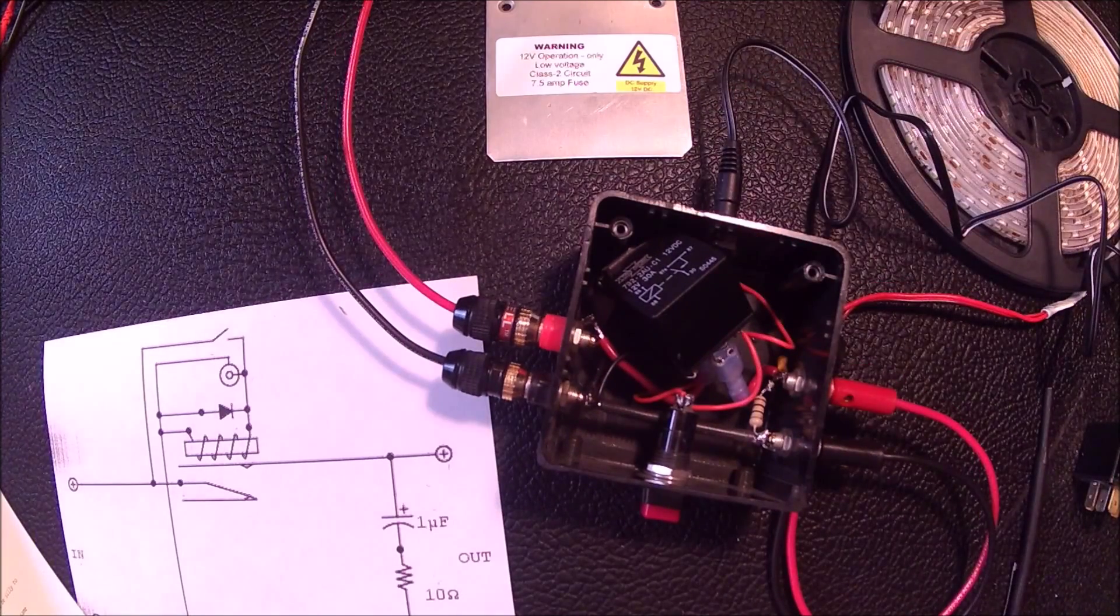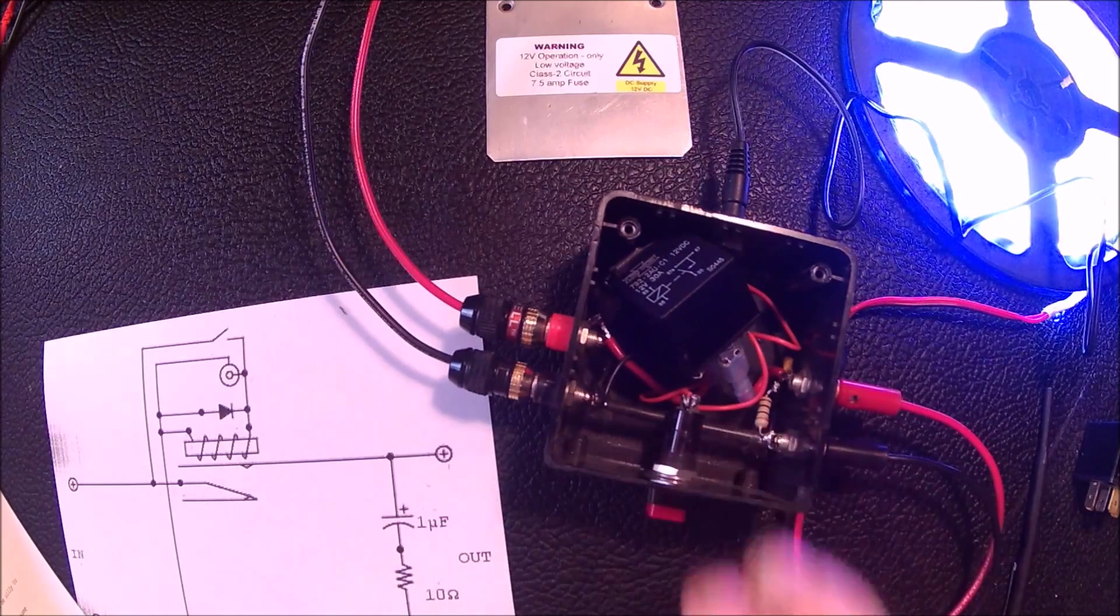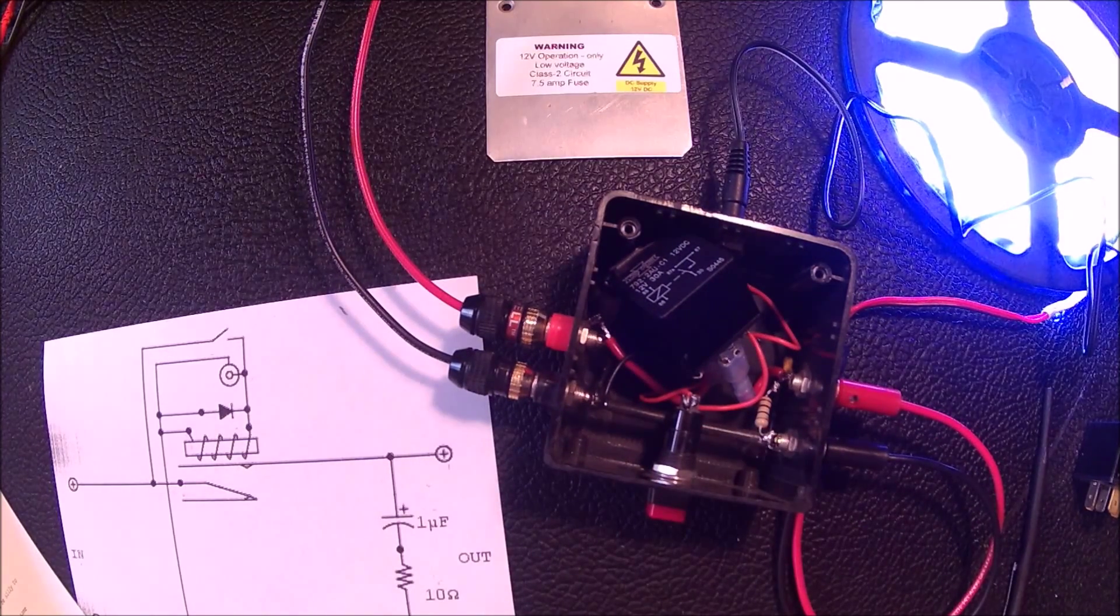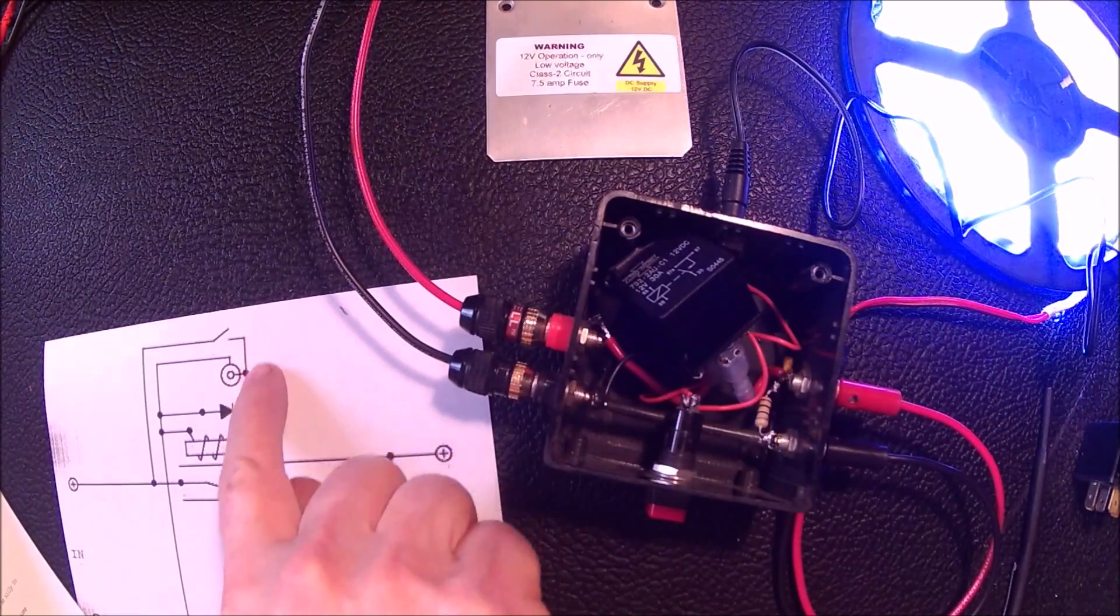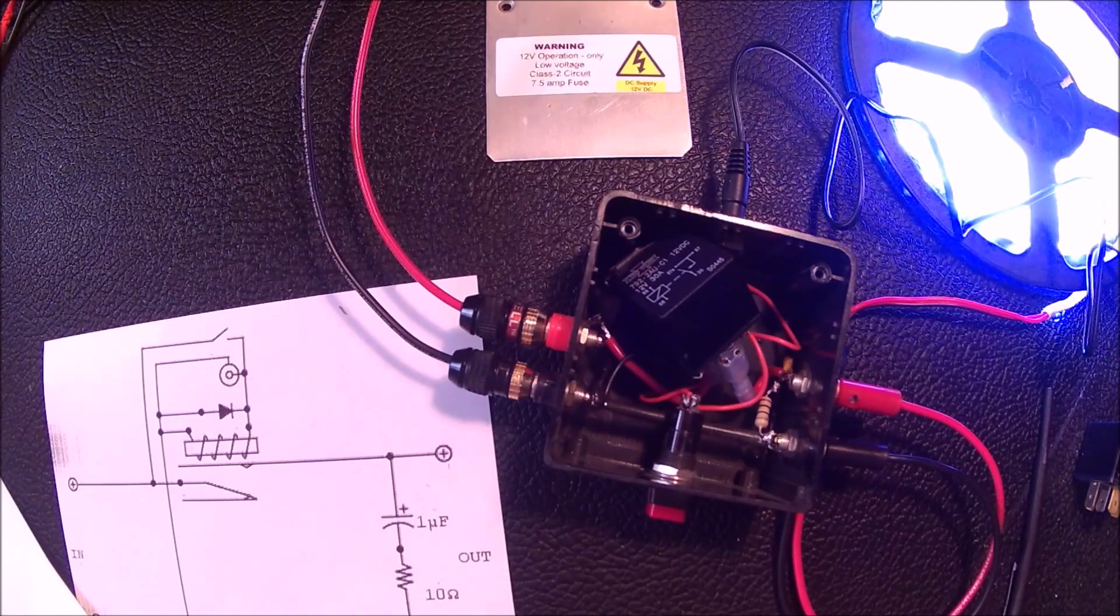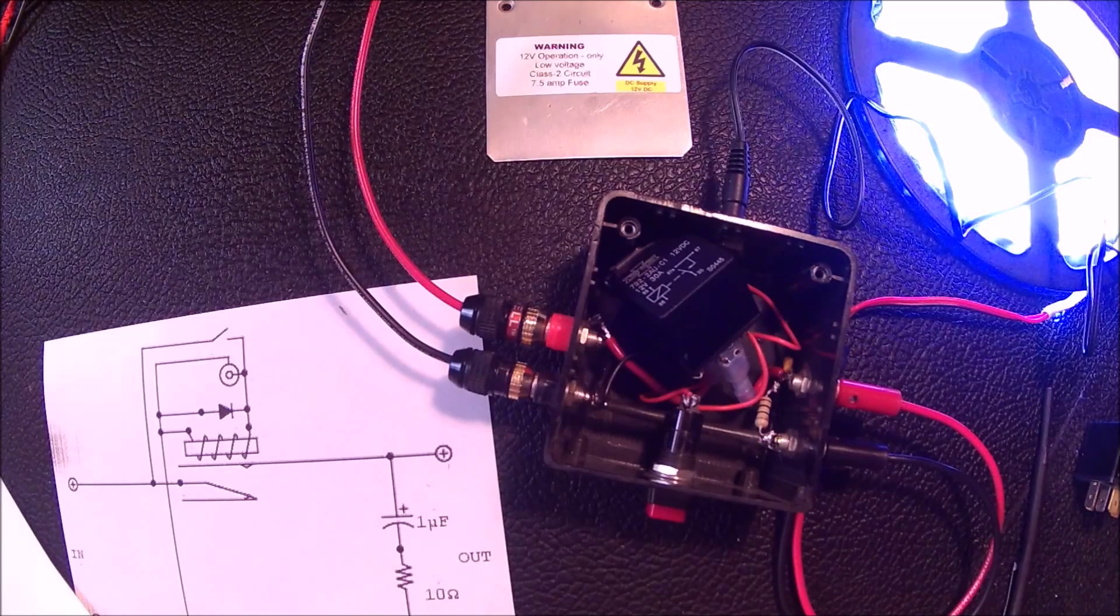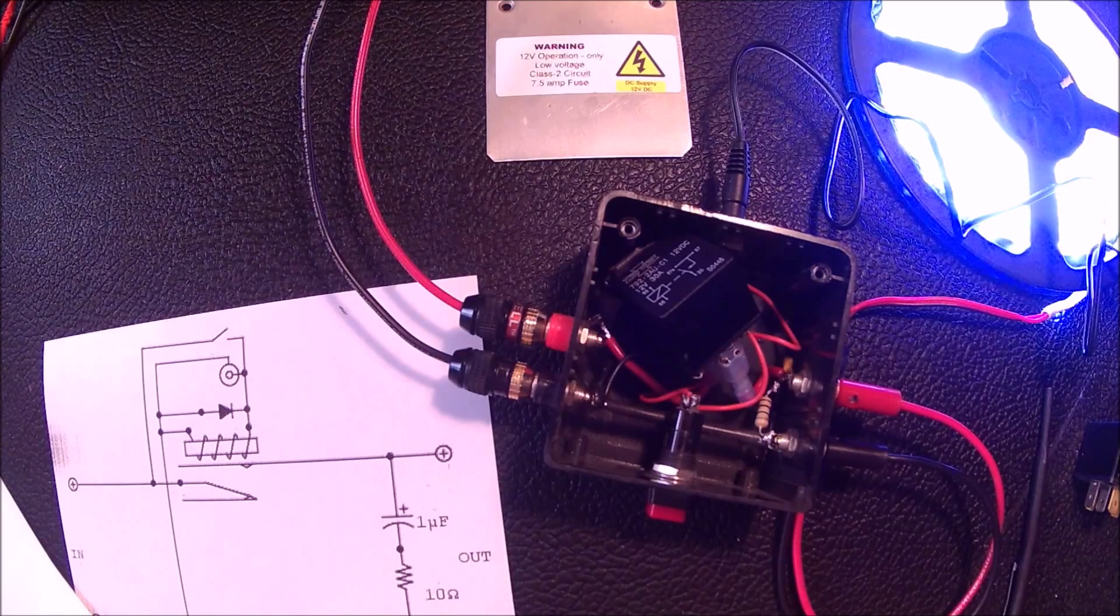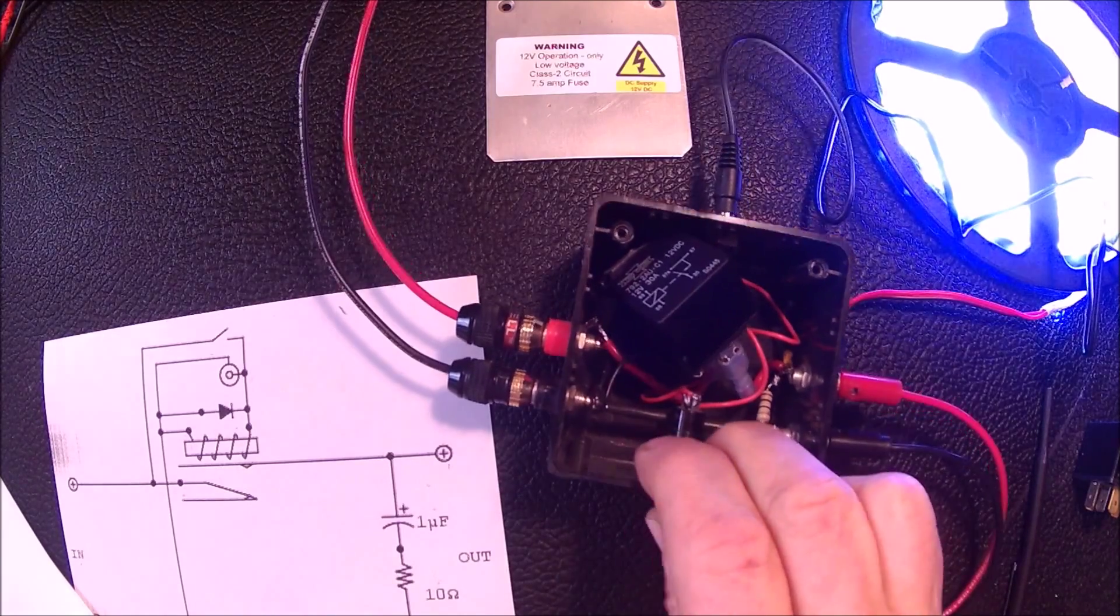So you might note that if I use both the remote input and the switch at the same time I'm shorting this input to this input. You can see right there. And yes that can happen. It generally causes no problems as a class 2 power supply is current limited and they tolerate even a dead short to ground. So there's basically no problem there.